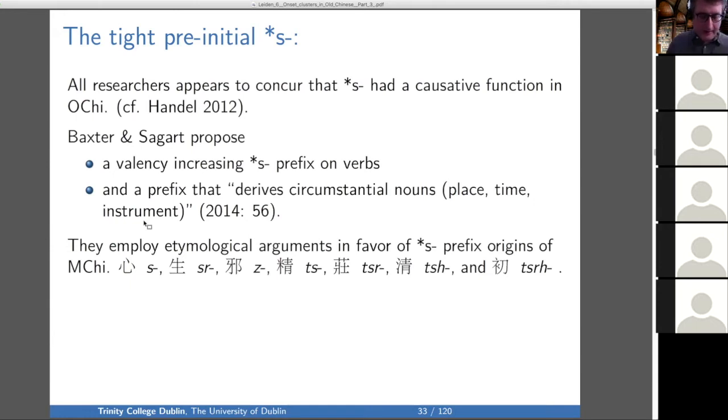They employ etymological arguments in favor of an S prefix origin of the following Middle Chinese initials: S, SR, Z, TS, TSR, TSH, and TSRH.